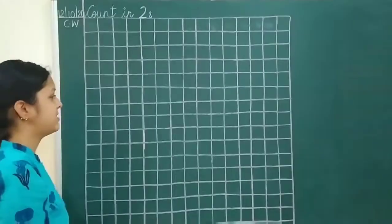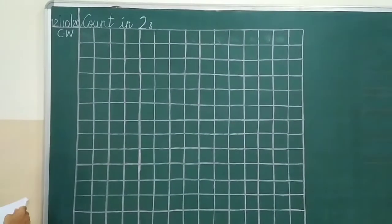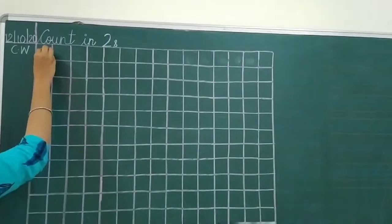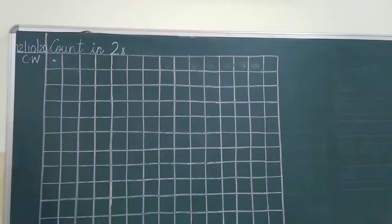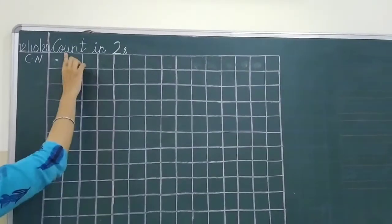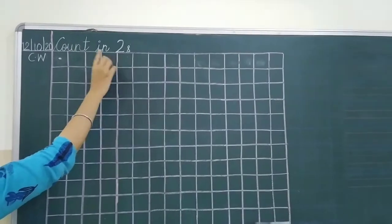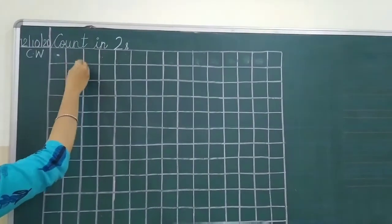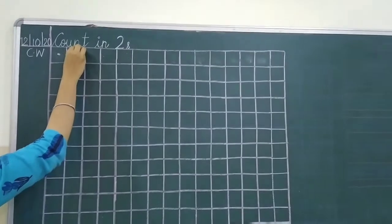Okay. Now, let's see. I will teach you how to write this. Put a dot first. It is a single number first. Right. So, we are writing it counting twos. So, write it after counting twos. So, now we will write 2.